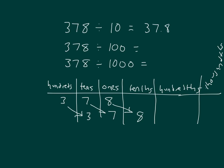What do you think these other numbers are? Did you get that? 378 divided by 1000, and that's 378 thousandths, which is written as 0.378.